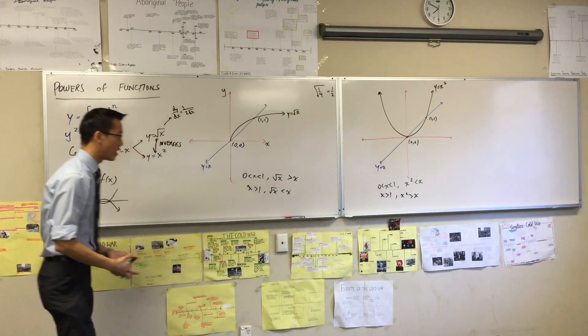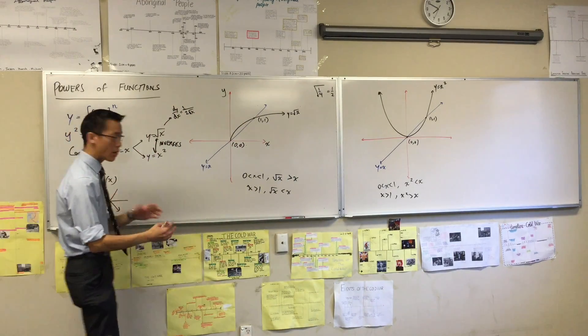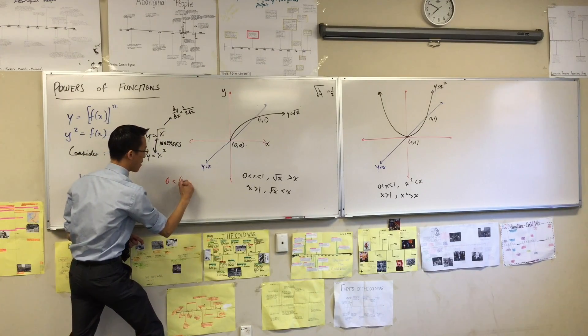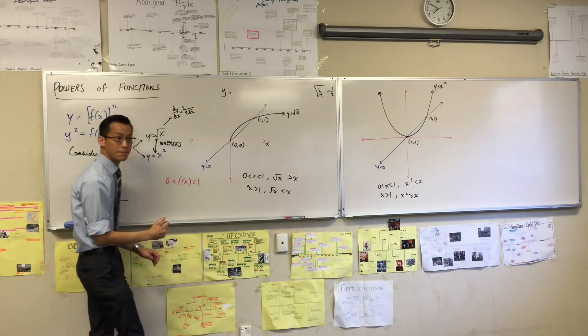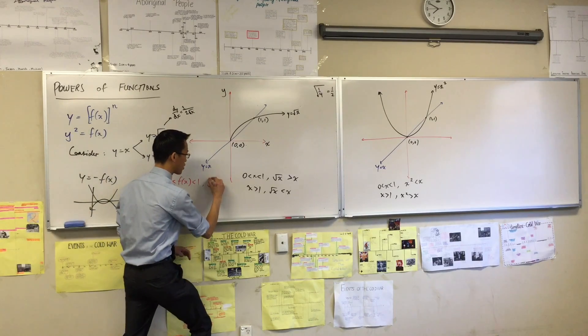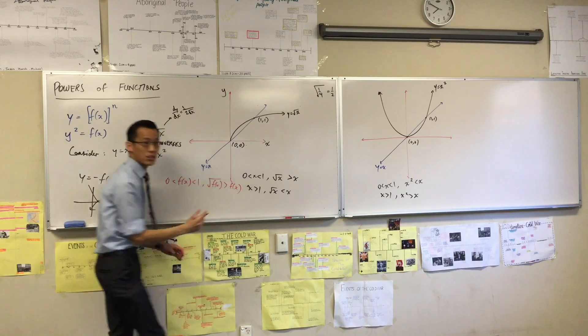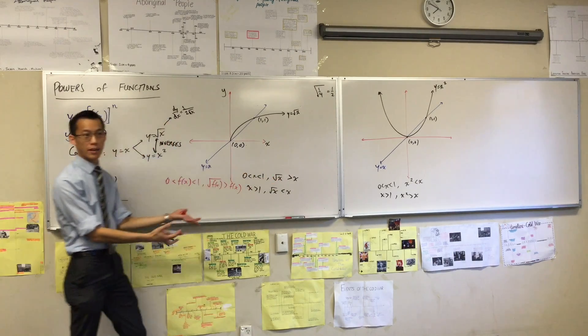Now, these don't just apply to x. These apply to any functions that you square or take the square root of. So, for example, if I say instead of this, if my function, whatever that happens to be, is less than 1, right? Then the square root of that function will be bigger than the function. Do you see that? So this is just stating generally here what we're looking at for y equals x.